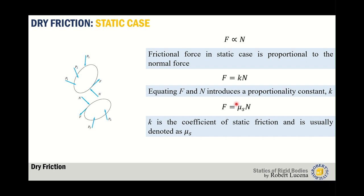The mechanism of friction is very complicated, so engineers rely on experimental results to determine the coefficient of friction between two objects. This μs has already been identified for many material pairs. When taking board exams or other examinations, the value of the coefficient of static friction is usually given.